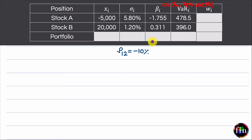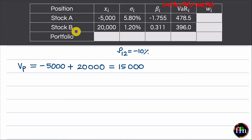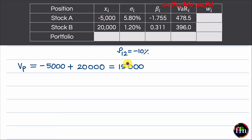Let us start by working out the total exposure for this portfolio. It is simply minus 5000 plus 20,000, which is 15,000. Based on this total exposure, I can work out the weight of each stock. For the first position, it will be minus 5000 divided by 15,000, which is minus 1 over 3. For the second position, it will be 20,000 divided by 15,000, which is 4 over 3.